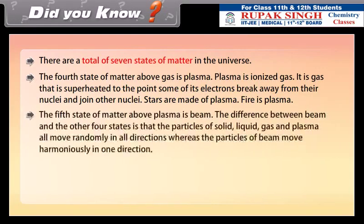The fifth state of matter above plasma is beam. The difference between beam and the other four states is that the particles of solid, liquid, gas and plasma all move randomly in all directions, whereas the particles of beam move harmoniously in one direction.